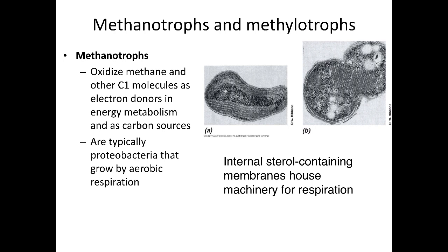We are talking about methanotrophs. These are organisms that oxidize methane and other C1 molecules as electron donors in energy metabolism, and they are also able to use these C1 molecules as carbon sources. They are another form of very interesting and unusual metabolism if all you have thought about is eukaryotic metabolism. These are typically proteobacteria and they will grow by aerobic respiration, using oxygen as the terminal electron acceptor.